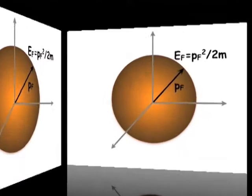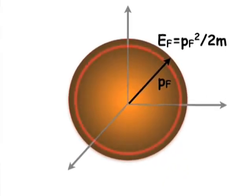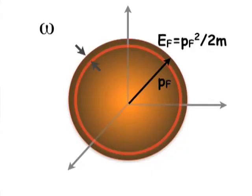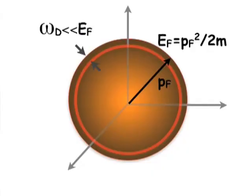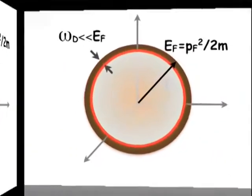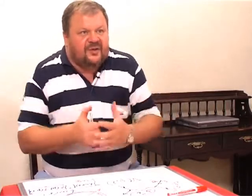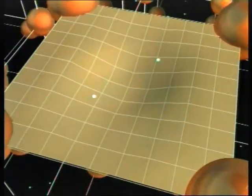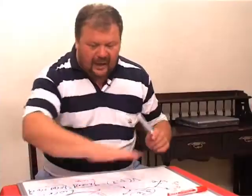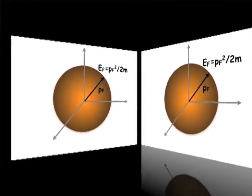And we see that only electrons near the Fermi surface, which are working electrons, in the skin of this orange with the width of ωDebye, which is much less than Fermi energy, only they can be attracted by electron phonon exchange. Only these electrons, all others, are out of our interest.